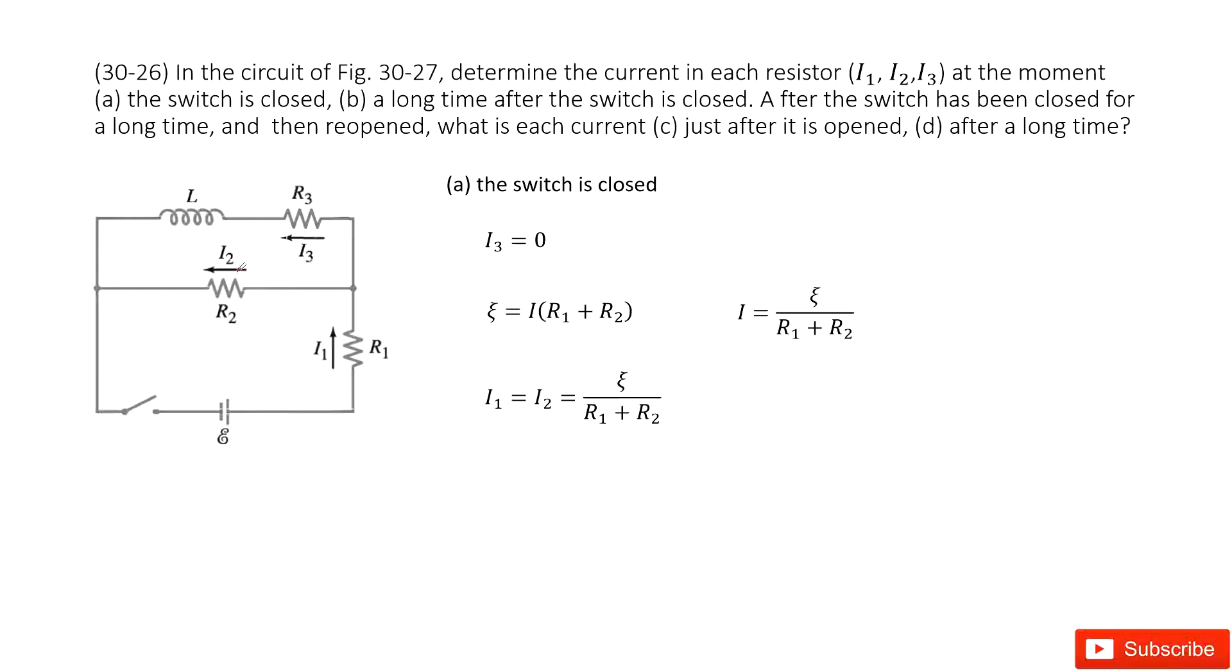So we have this circuit with inductor and resistor. And we also have the current I1, I2, I3.